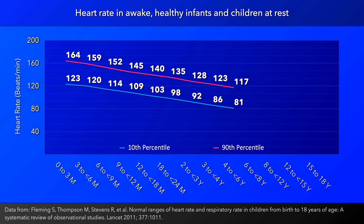The data presented here is from a systematic review of observational studies, which can be found at the bottom of the screen. According to the data, the heart rate from 0 to 3 months of life is normally between 123 and 164 beats per minute.